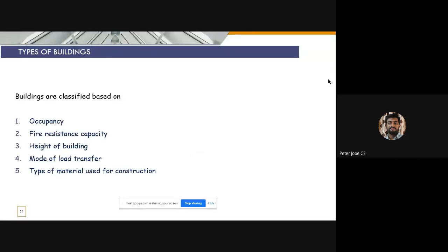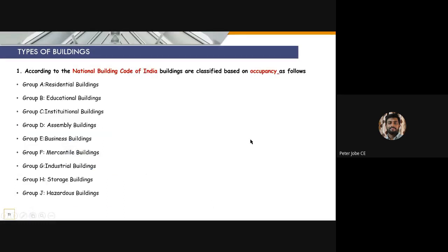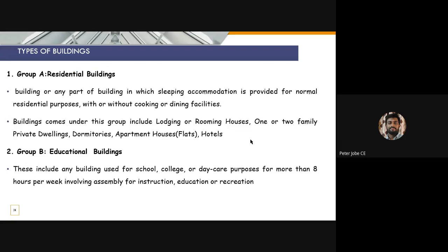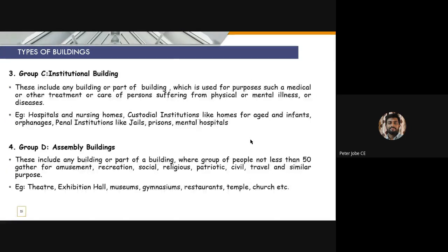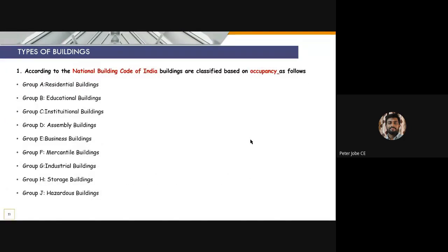Then we moved forward to the types of buildings, which were classified on the basis of occupancy, fire resistance, height of building, mode of load transfer, type of material used for construction, etc. After that, there was a different classification based on the NBC — National Building Code — where there were different types starting from Group A through Group J.